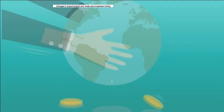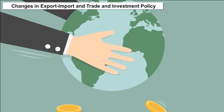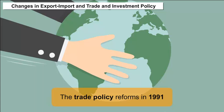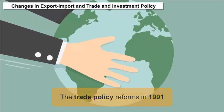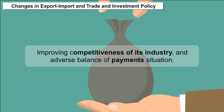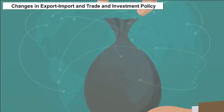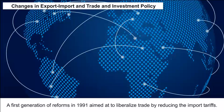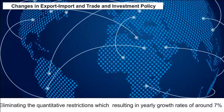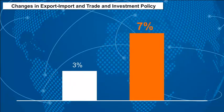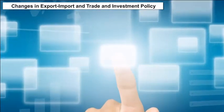Liberalization – Changes in Export-Import, Trade, and Investment Policy: The trade policy reforms of 1991 were guided mainly by concerns over globalization of the Indian economy, improving competitiveness of its industry, and the adverse balance of payments situation. First-generation reforms in 1991 aimed to liberalize trade by reducing import tariffs and eliminating quantitative restrictions, resulting in yearly growth rates of around 7% compared with 3% before the reforms.